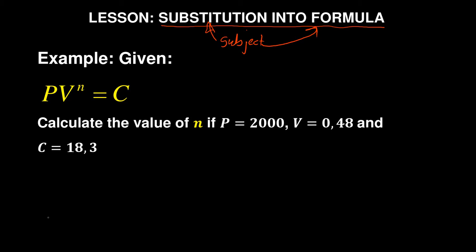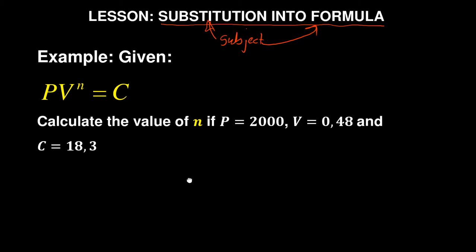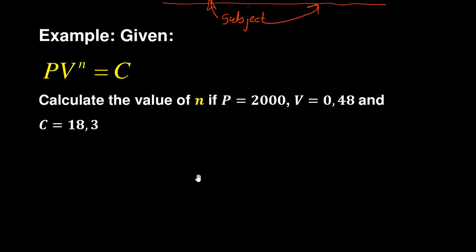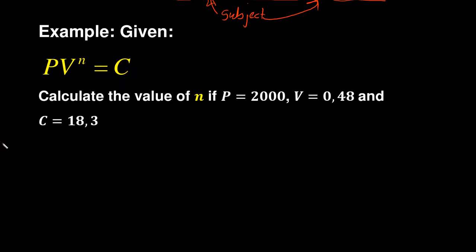Let us look at an example. Given here it says PV to the power of n is equal to C. Calculate the value of n if P = 2000, V = 0.48, and C = 18.3.